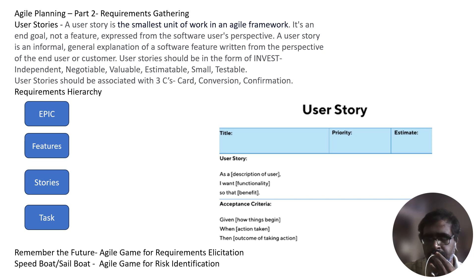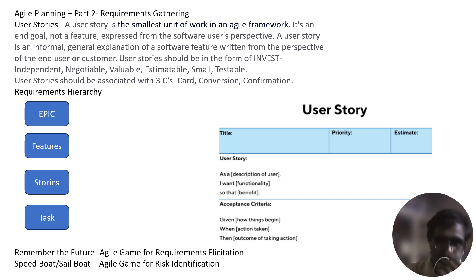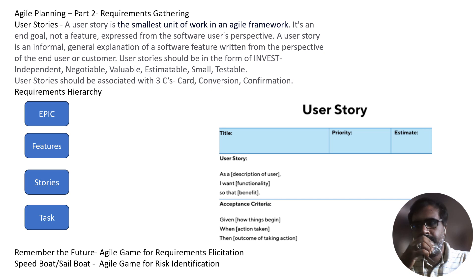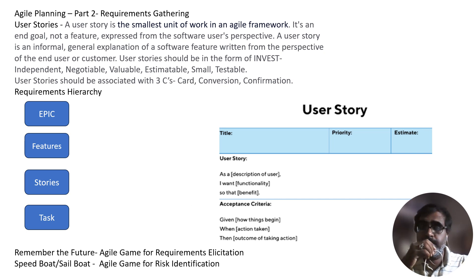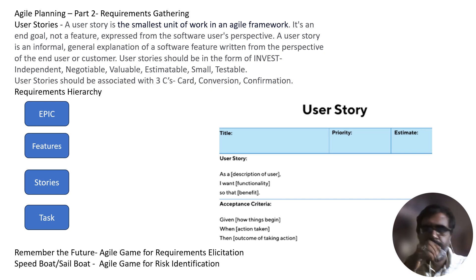This is an example of a performance requirement of the system. A user story should always cover all the layers of the system architecture and not just one or a few layers. For example, a user story like 'As a user, I want my name stored in the database so that I can retrieve it later on' is not a good user story as it mainly covers the database layer. A better user story would be: 'As a user, I want to enter my name in the system so that it will be available whenever I login to the system.' This is the way user stories should be structured and approached.